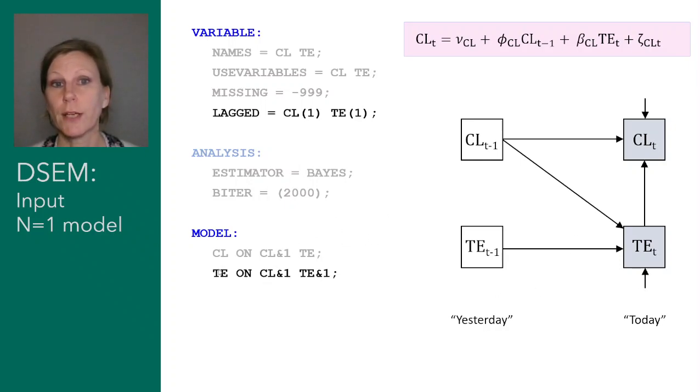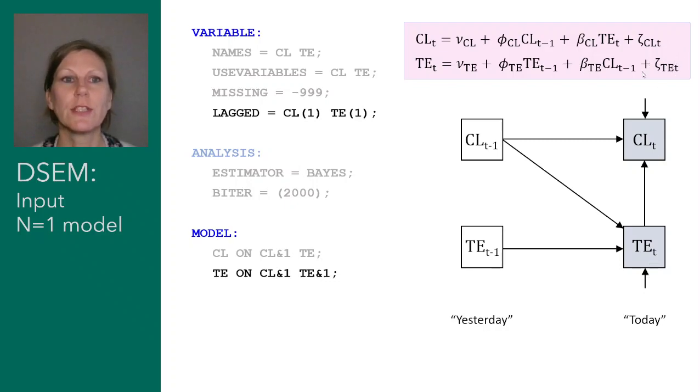We can now also write the regression equation for tension. So we see we have tension regressed on tension at the previous occasion and closeness at the previous occasion. And because tension is now also a dependent variable, there will also be residual parts that cannot be predicted, and that's this little arrow here, or in the regression equation, it's the zeta.